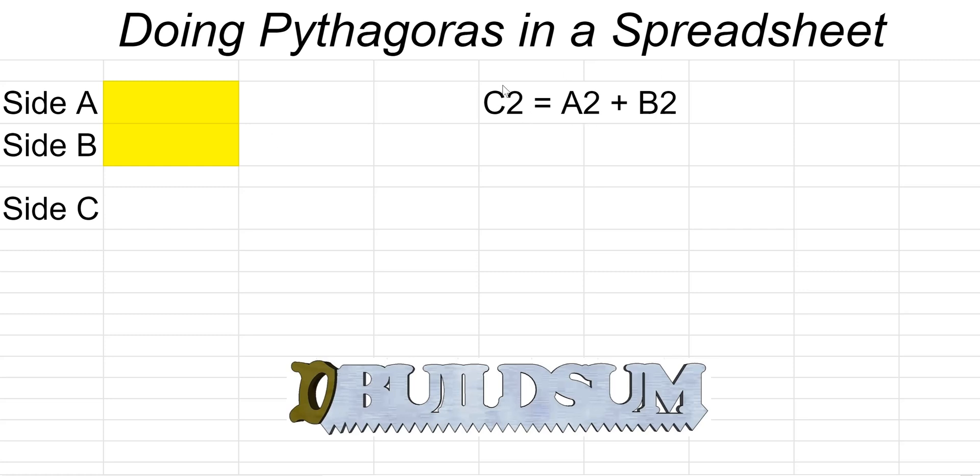I've got the formula here for Pythagoras. C squared—I can't do superscript in this spreadsheet so I've had to do it like this—C squared equals A squared plus B squared. So C squared is generally the hypotenuse of the triangle and A and B are the other two sides.